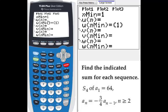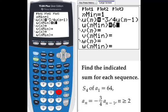We need to put the recursive sequence into u sub n equals. So negative 3 divided by 4 times u sub n minus 1, then u sub 1 equals 64.